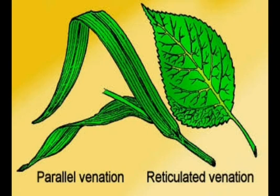In the leaves of grass, you might have seen that the veins are parallel to one another, and this is called parallel venation.